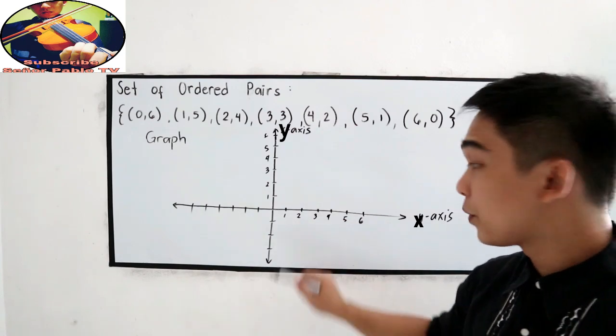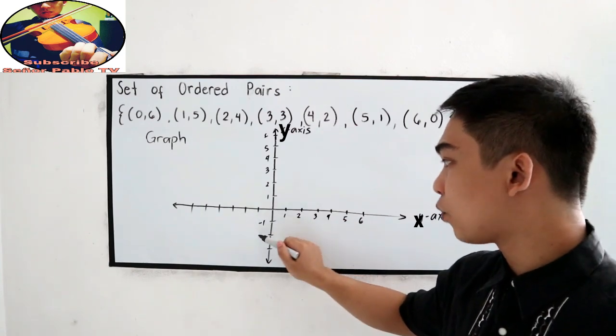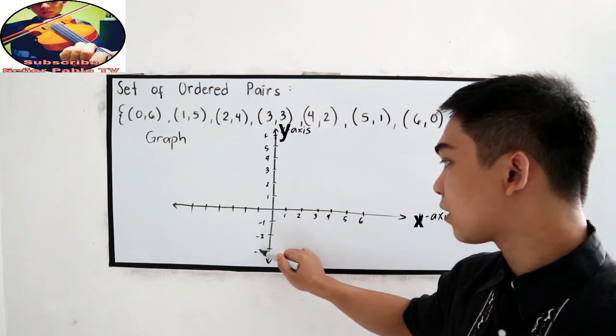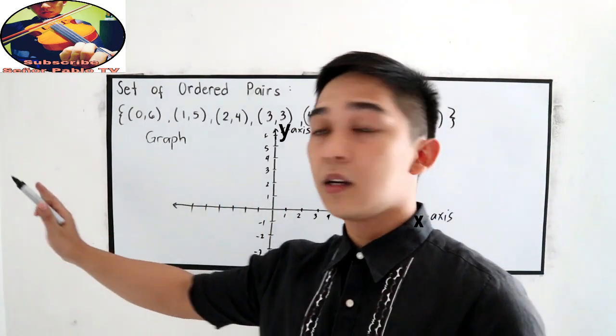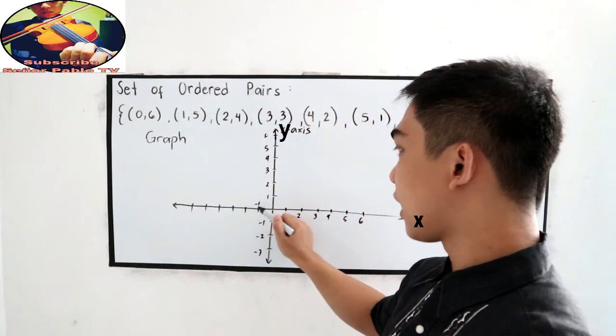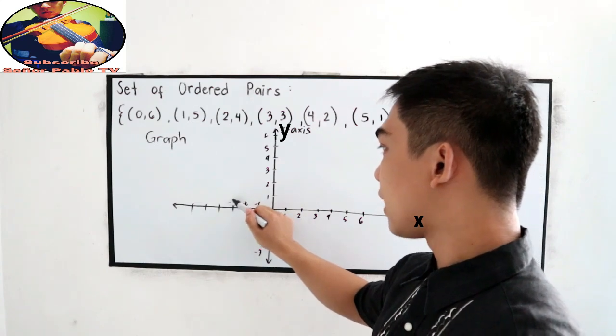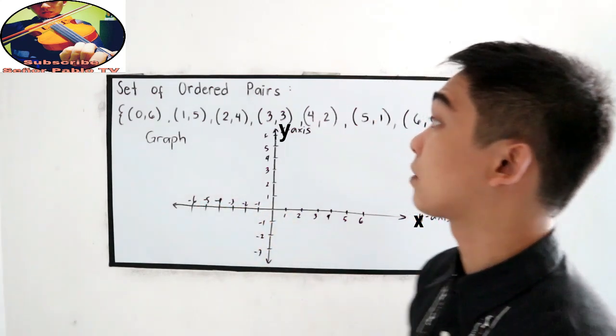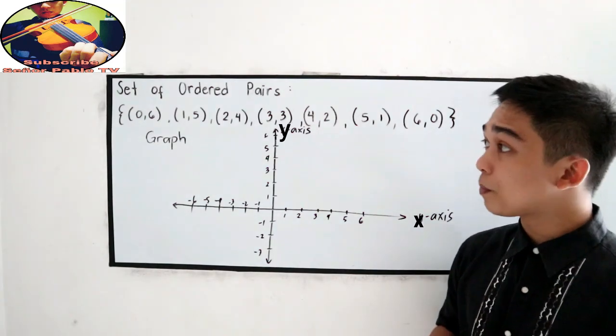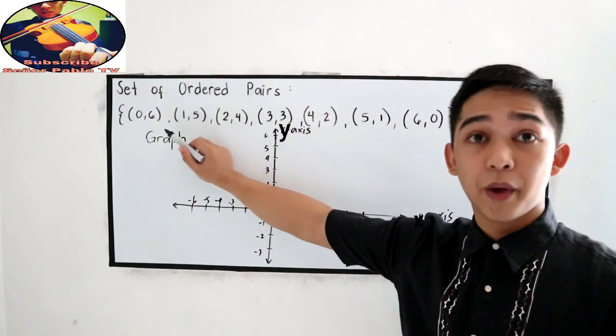On the lower part, we have negative numbers: negative 1, negative 2, negative 3, and so on. And, on the left side, we have the negative numbers: negative 1, negative 2, negative 3, negative 4, negative 5, negative 6. This time, we are going to plot the points in our ordered pairs.